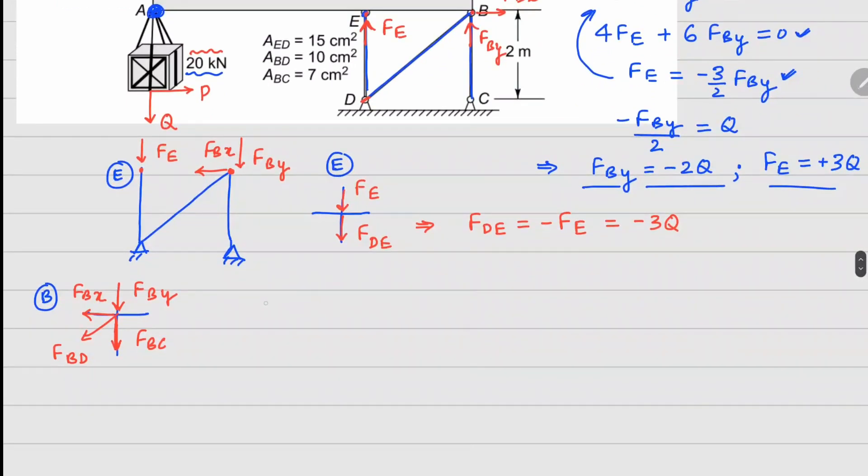For x force balance, we have FBx plus FBD over square root 2, because the angle is 45 degrees. This is 2 meters here and 2 meters there, that's why square root 2 comes there, equals 0. In the y direction, FBy plus FBD divided by square root 2 plus FBC equals 0.